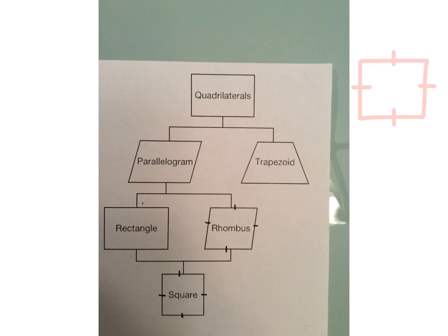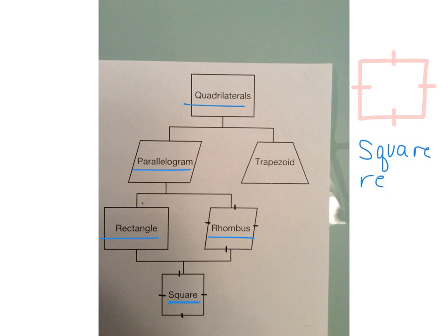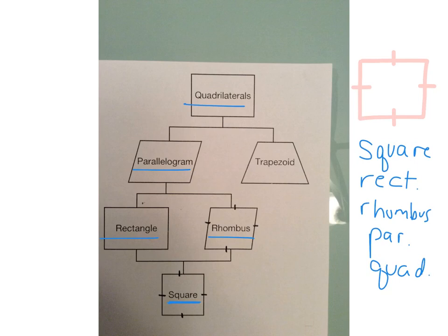Now we've got this shape — this is a square. A square is also a rectangle, also a rhombus, also a parallelogram, and also a quadrilateral, because the square falls underneath those shapes on the family tree and it also fits their definitions. So a square is a rectangle, a rhombus, a parallelogram, and a quadrilateral. The best name is square, but it can be classified as all of those other shapes.